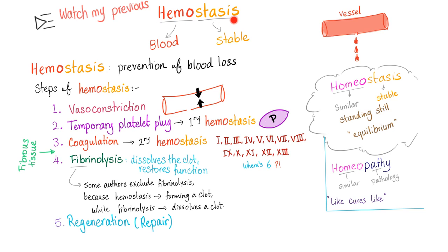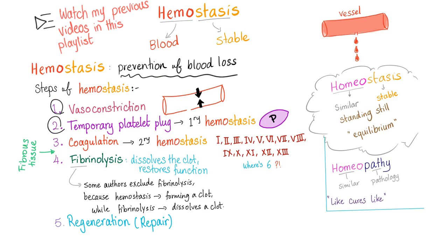Hemostasis is the process of prevention of blood loss or stopping the bleeding, and it consists of many steps: vasoconstriction, temporary platelet plug, coagulation, and fibrinolysis.